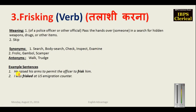The next word is 'frisking', which means to examine or inspect someone. A police officer or official passes their hands over someone in a search for hidden weapons, drugs or other items. The second meaning is skipping or playing around. Synonyms: search, body search, check, inspect or examine. For the 'skip' meaning, synonyms are frolic, gamble and scamper. Antonyms are walk and trudge. Example: 'He raised his arms to permit the officer to frisk him.' 'I was frisked at the US immigration counter' — meaning I was searched.